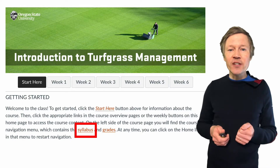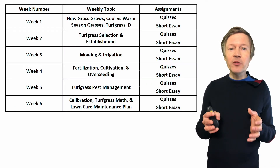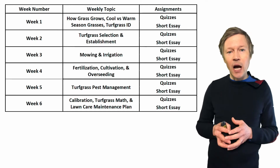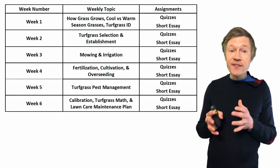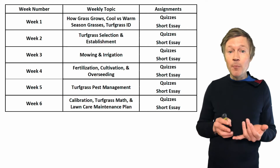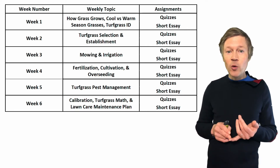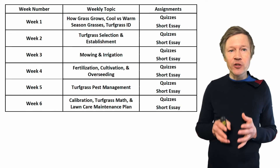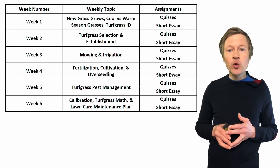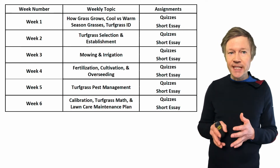When we dig a little bit deeper into the course material by going to the syllabus, we're going to be able to break this down into six main topics over a period of six weeks. In week one, we're going to talk about how turfgrass grows, comparing cool and warm season grasses, and how to identify turfgrass to species. In week two, we're going to be talking about how to select the proper turfgrass for your site and how to establish it from seed.